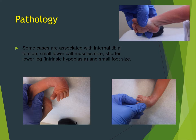Other associated features in club foot include internal tibial torsion, small calf muscles, a shorter lower leg, and a smaller foot size due to intrinsic hypoplasia. These features are most obvious in unilateral cases, where the affected foot will always be slightly smaller than the unaffected foot.